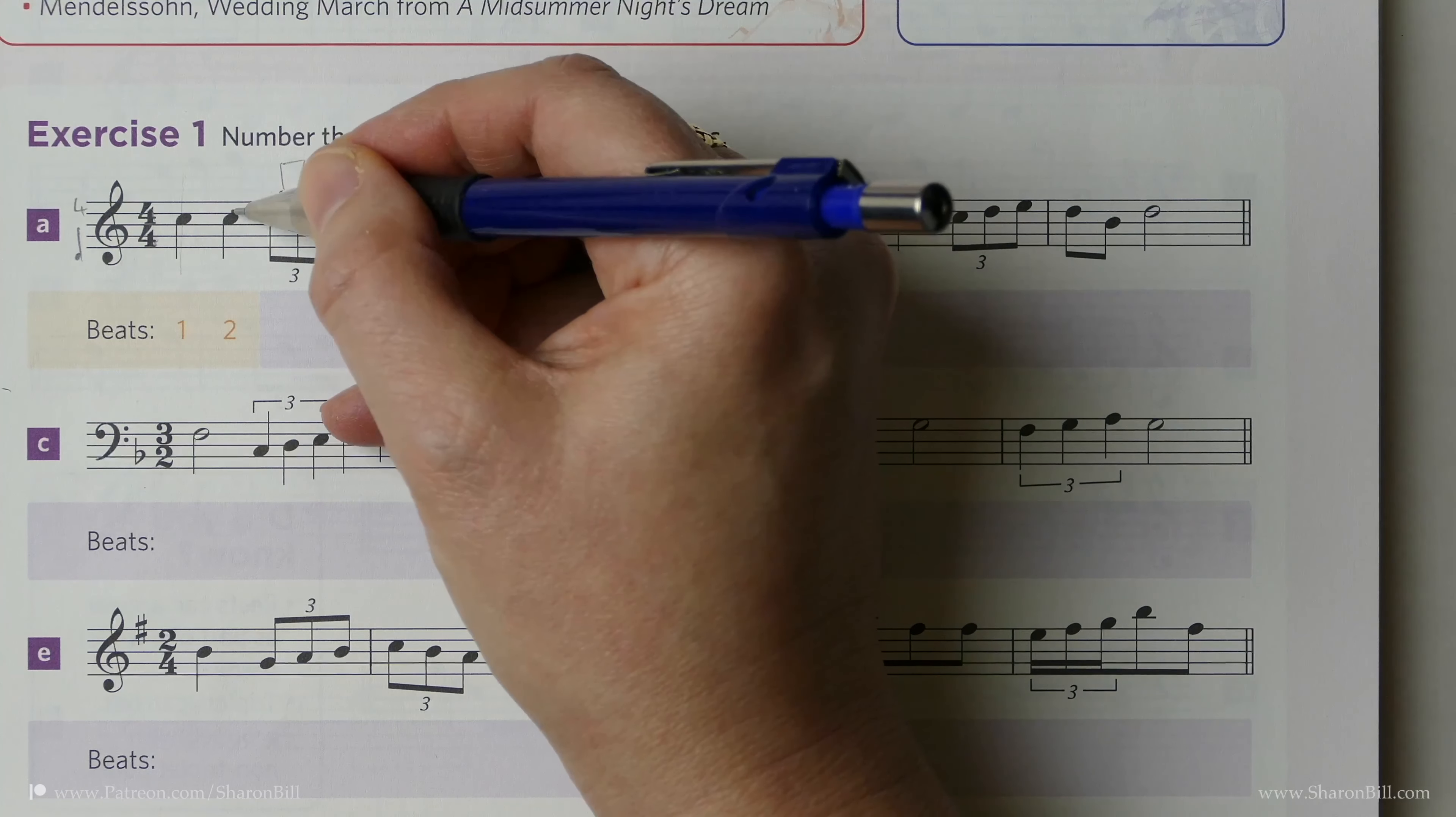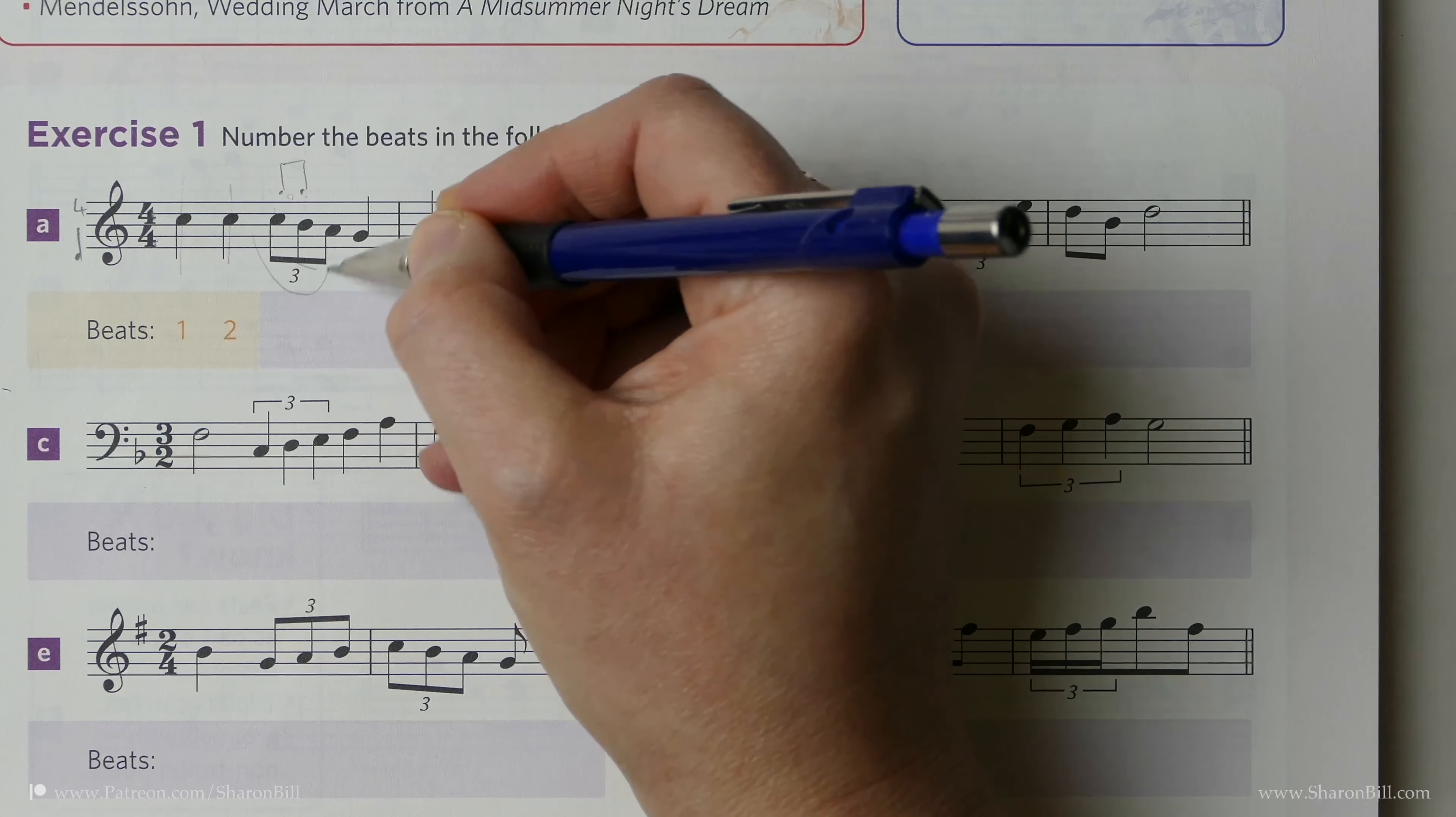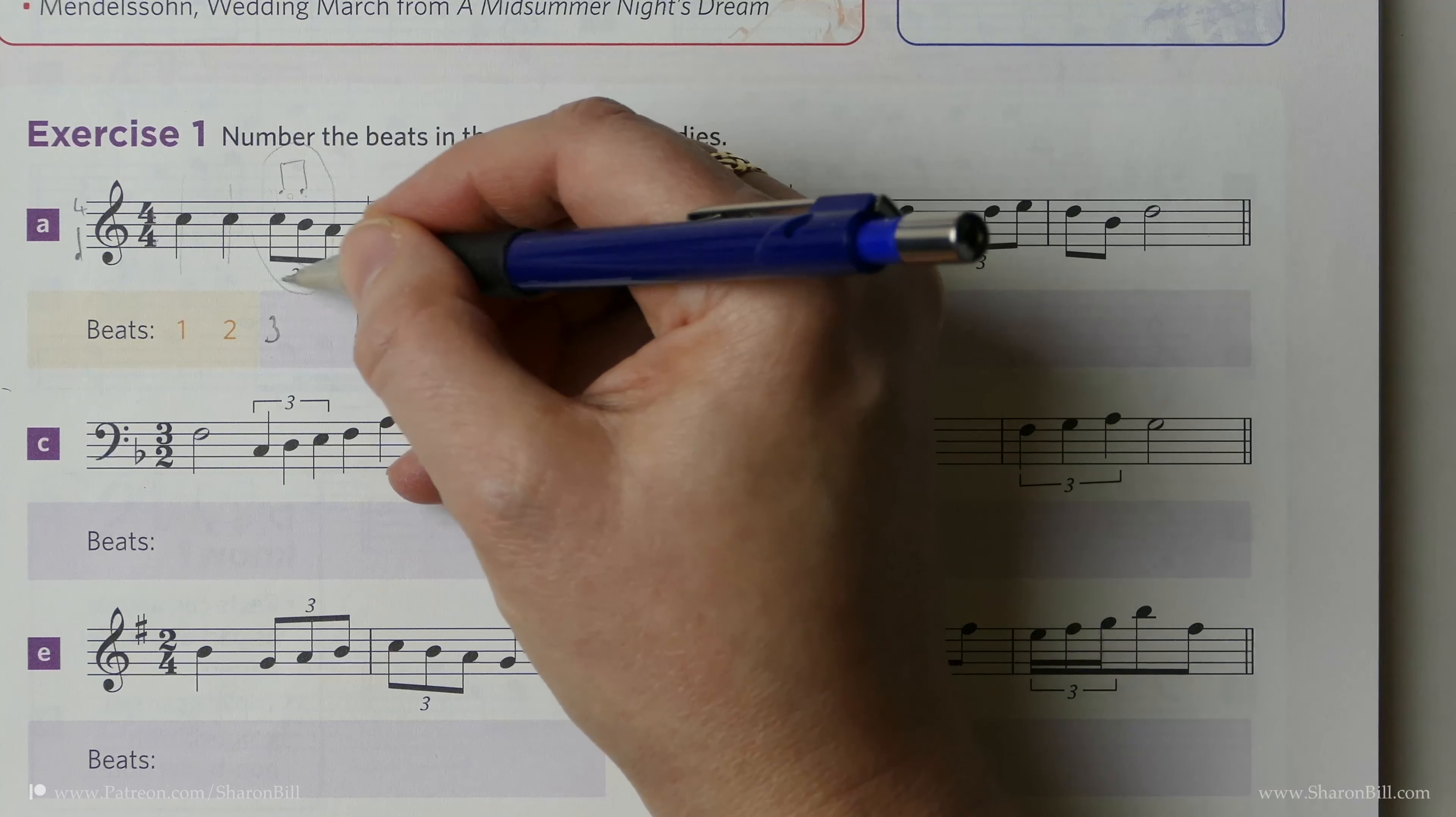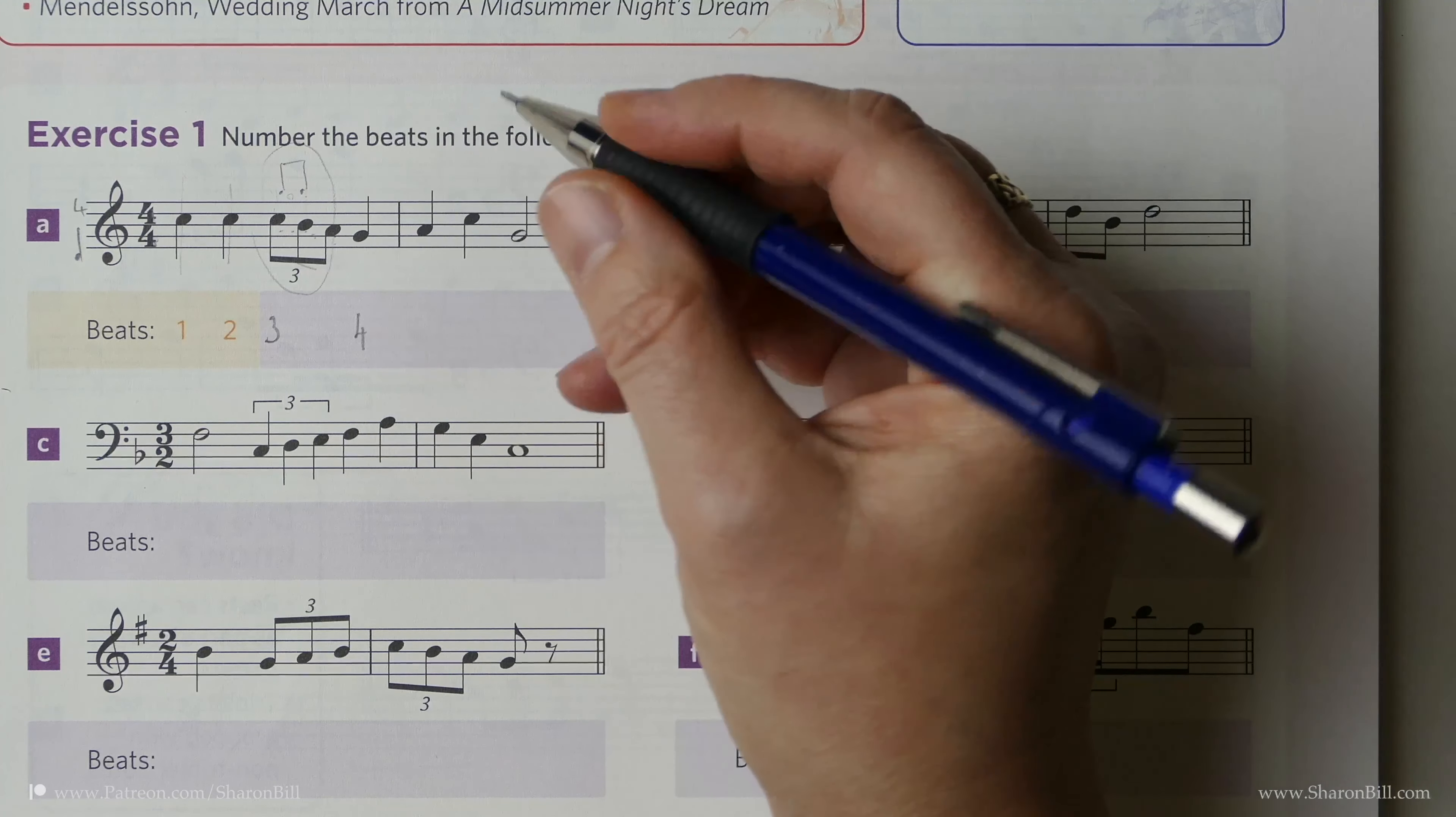There's beat 1, there's a crotchet's worth, there's a crotchet's worth. 3 in the time of 2 is also a crotchet beat's worth. So there's beat 3, there's beat 4. The principle is exactly the same, we're just squishing an extra note in and dividing it equally amongst the beat.